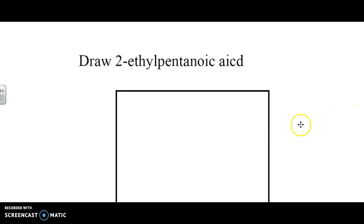If we go down a little bit further, it's going to ask us to draw 2-ethyl pentanoic acid. Penta means there's five carbons. So one, two, three, four, five. And at spot two, we're going to put an ethyl group. And here we're going to draw the carboxylic acid group with the OH.